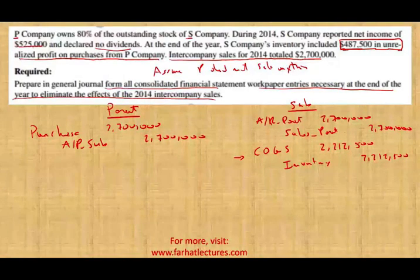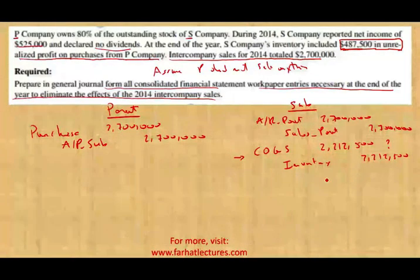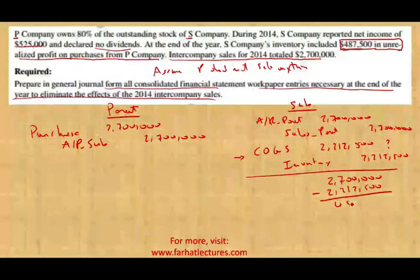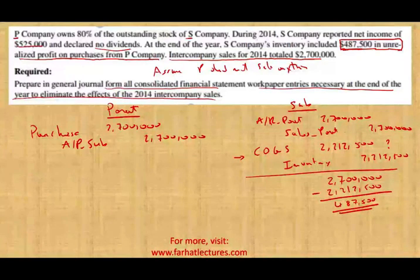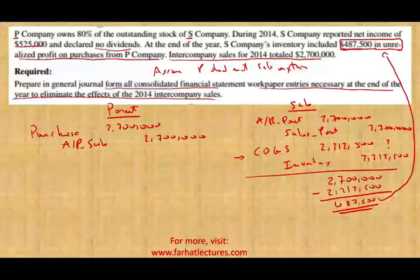You might be asking: how did I come up with that figure? Since they have a profit of 487,500 and their sale was 2.7 million, I assumed their cost of goods sold was 2,212,500. This gives them a profit of 487,500, which is an intercompany profit that needs to be eliminated when we prepare the consolidated entry. So this is where the 487 came from — this is what happened right before we start to prepare the work paper entries.